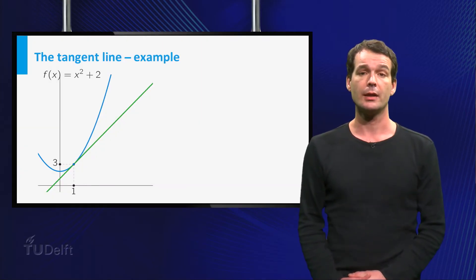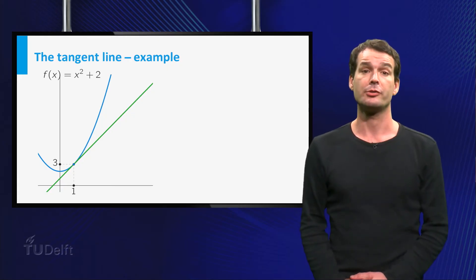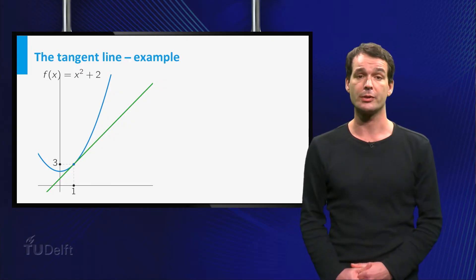Let's look at an example. Here we see the graph of the function x squared plus 2. We will determine the equation of the tangent line to the graph at the point.